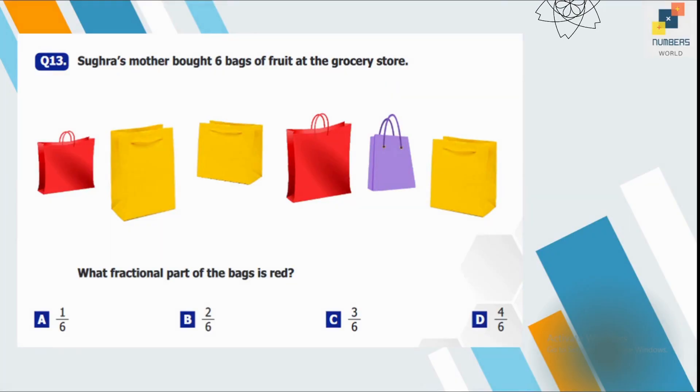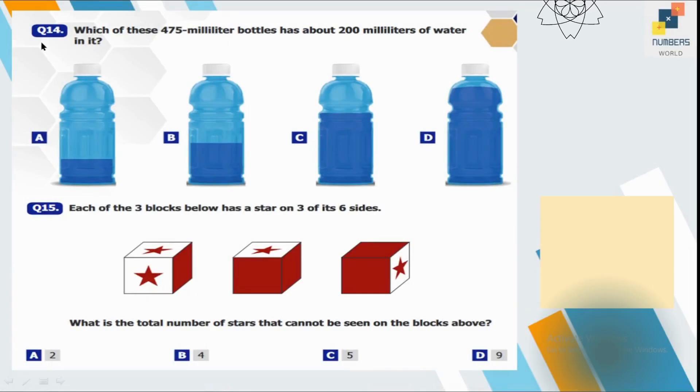Question number 13. Supra's mother bought six bags of fruit at the grocery store. What fractional part of the bag is red? So two out of six. It's quite visual. Question number 14. Which of these 475 ml bottle has about 200 ml of water in it? So we can clearly see only these are quite perfect option over here. Otherwise, rest of the bottles are showing some discrepancy.